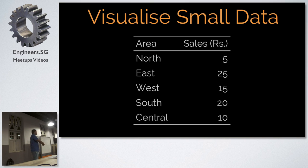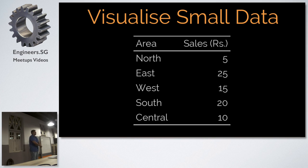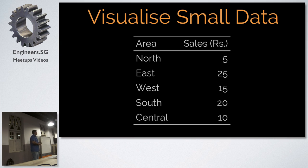We'll start with the smallest possible data set — five observations, a very simple dataset. Area: north, east, west, south, central. You have a categorical variable and you have some sales in rupees. If you were to visualize it, how would you do that? How many ways can you visualize it? Audience suggestions: pie chart, histogram — probably not — bar chart, heat map, bubble chart. We'd probably come up with three or four ways.